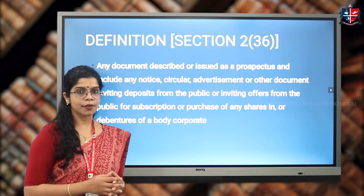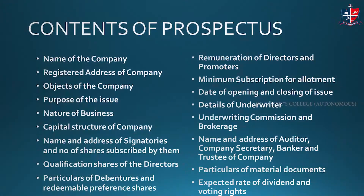This is defined in Section 2, subsection 36 of the Companies Act of 2013. The contents of a prospectus include: the name of the company, the registered address, objects of the company, purpose for which the issue has been made, nature of business, capital structure, equity-debt structure, name and address of signatories, and the number of shares subscribed by them.